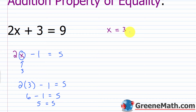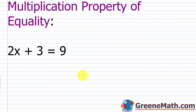The other property we want to know is the multiplication property of equality. This property tells us that we can multiply both sides of an equation by the same non-zero number and it will not affect the solution. Remember, if you multiply by 0 it becomes 0, so you can't use 0 — it has to be a non-zero value. For example, 2X plus 3 equals 9 has solution X equals 3. If I multiply both sides by negative 2, will X equals 3 still be the solution? Let's try it out.